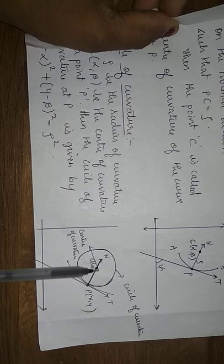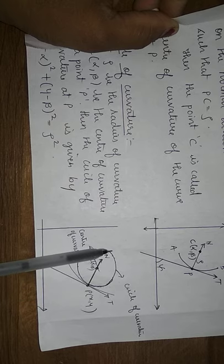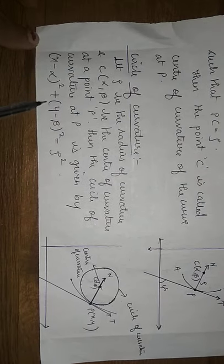On this curve I have taken a point P, drawn tangent PT, and a normal at P. I have considered a point C — the center of curvature. As the center moves and the radius remains constant or changes, for different positions of the point it traces a curve. This traced curve is known as the circle of curvature, and its equation is x minus alpha whole squared plus y minus beta whole squared equals rho squared.